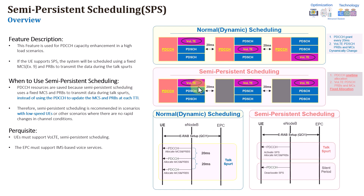The same resources, location for PRBs, and MCS are used throughout the entire call. This means that every 20 milliseconds there is no need for a PDCCH allocation, which saves PDCCH resources and results in a great improvement in PDCCH capacity, as you can see here.